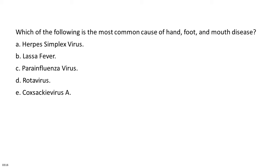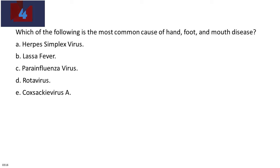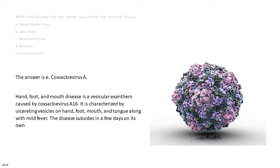Which of the following is the most common cause of hand, foot, and mouth disease? A. Herpes simplex virus. B. Roseola virus. C. Parainfluenza virus. D. Rotavirus. E. Coxsackievirus A. The answer is E. Coxsackievirus A. Hand, foot, and mouth disease is a vesicular exanthem caused by Coxsackievirus A16. It is characterized by ulcerating vesicles on hand, foot, mouth, and tongue along with mild fever. The disease subsides in a few days on its own.